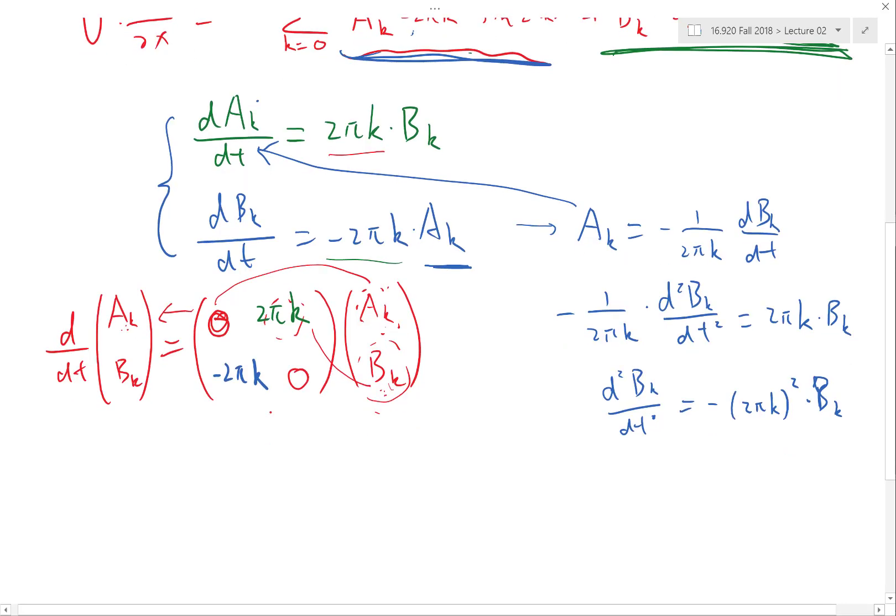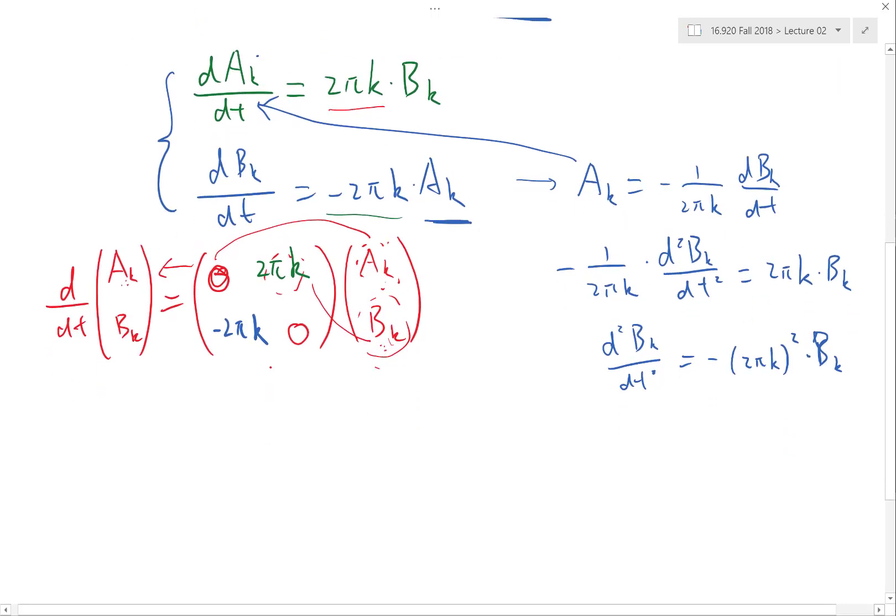Just like in the last lecture, we have dA over dt equal to a constant times A. Here we have d vector A and B over dt equal to a constant matrix times the same vector.